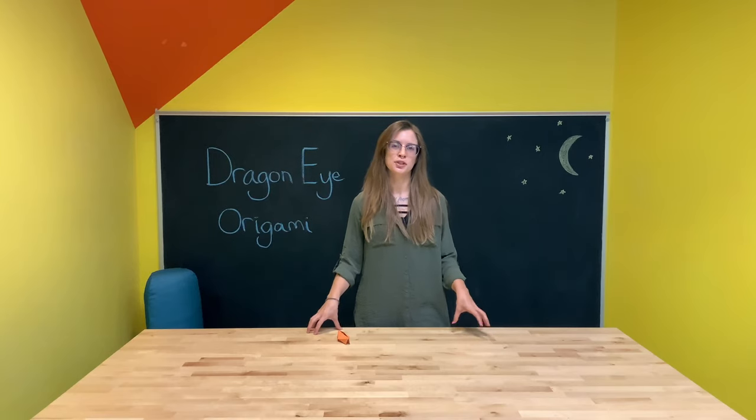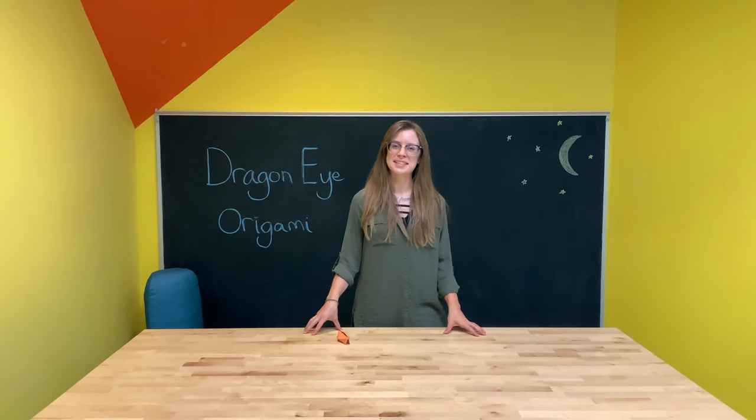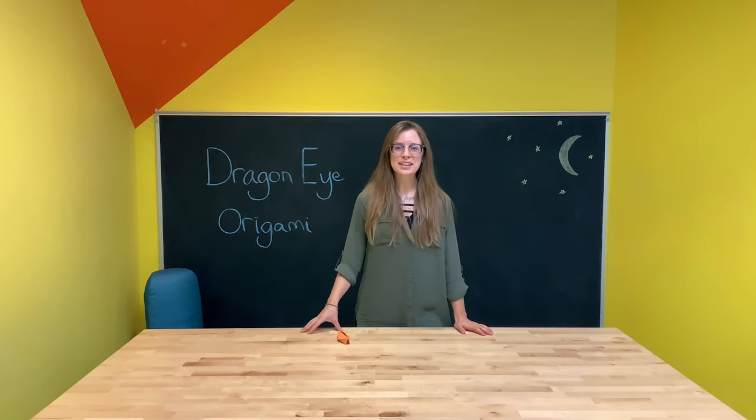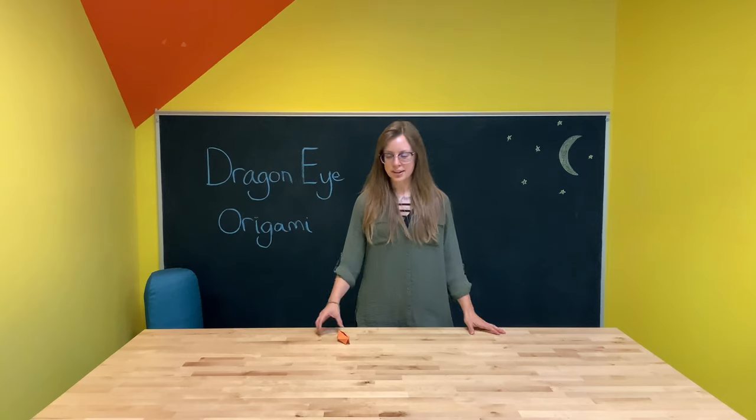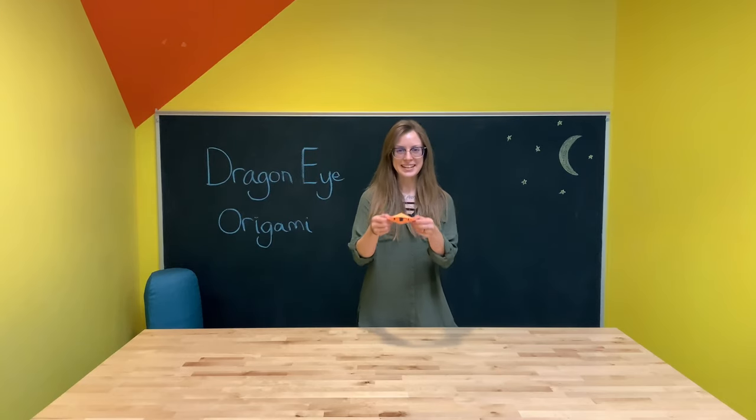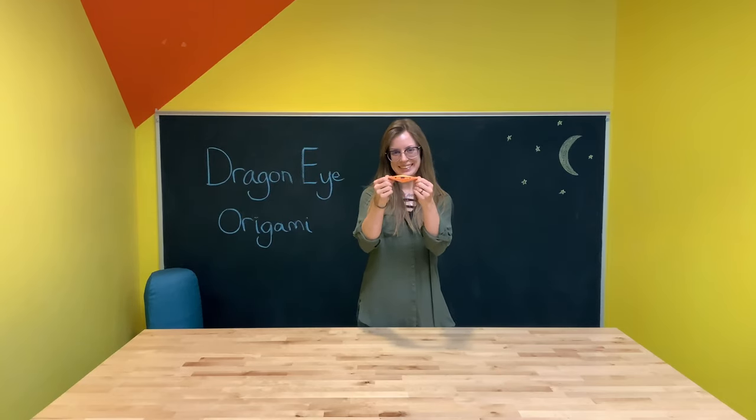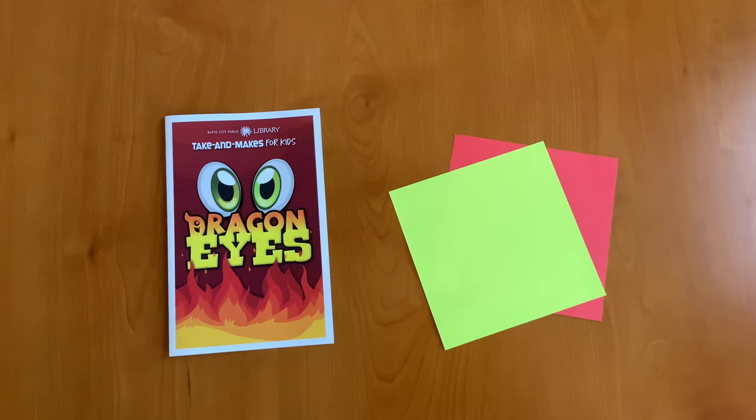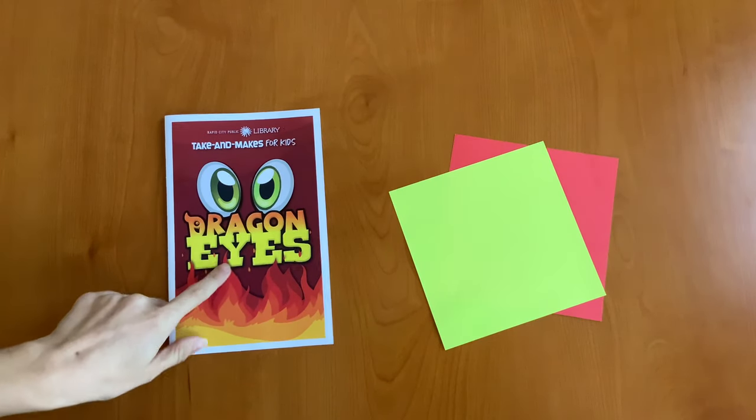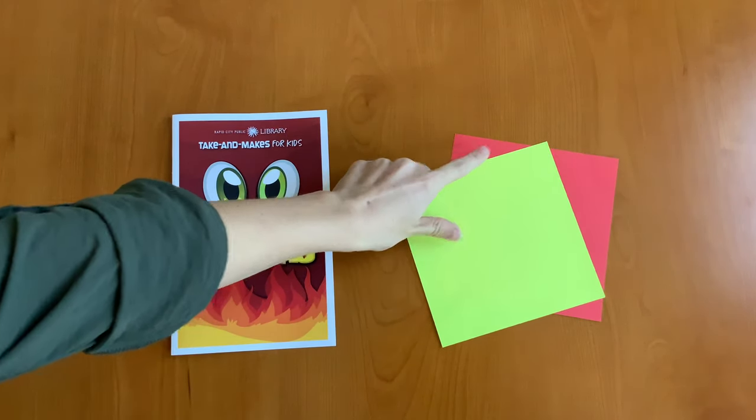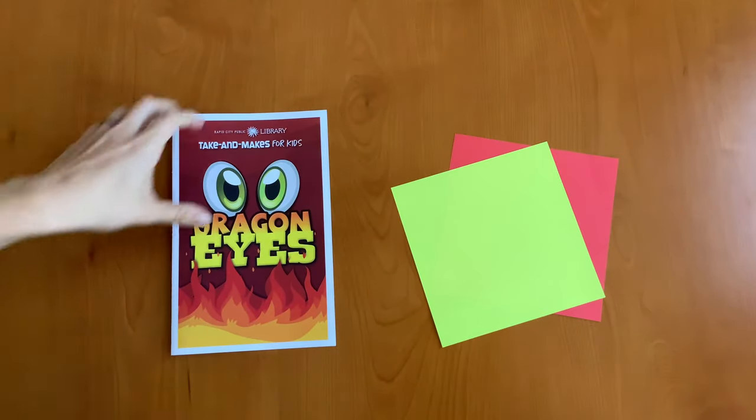It's really amazing. So you should go online with your parents and look up some cool origami designs and you can practice at home. Alright, well let's take a look at what's in our kits today and let's get started and make our blinking dragon eyes. In your craft kit you should have an instruction booklet and two sheets of origami paper. Let's get started.